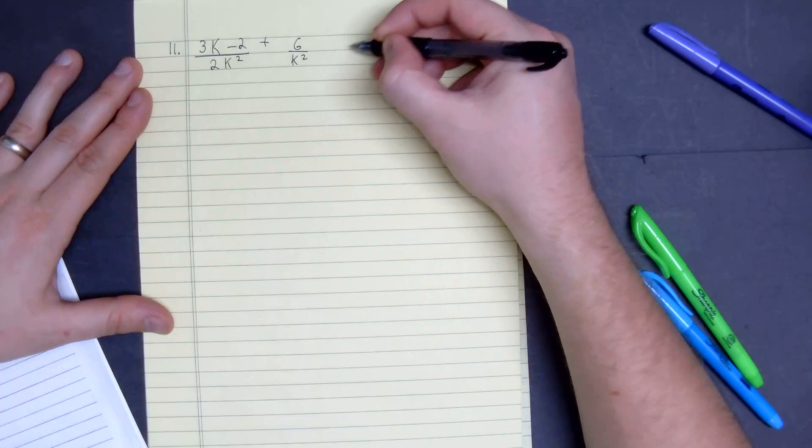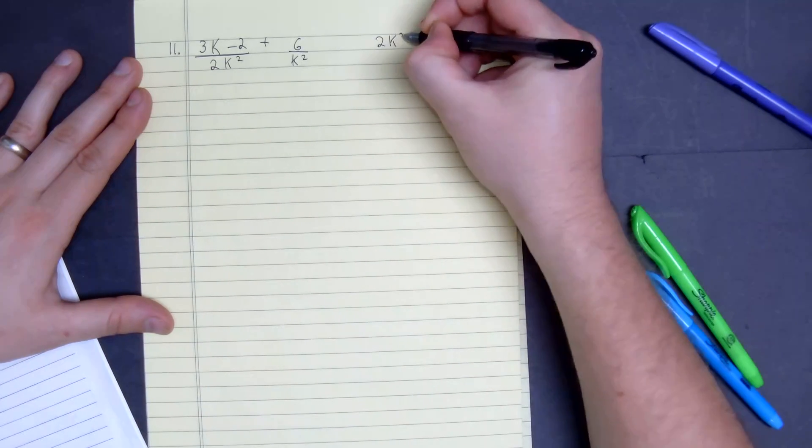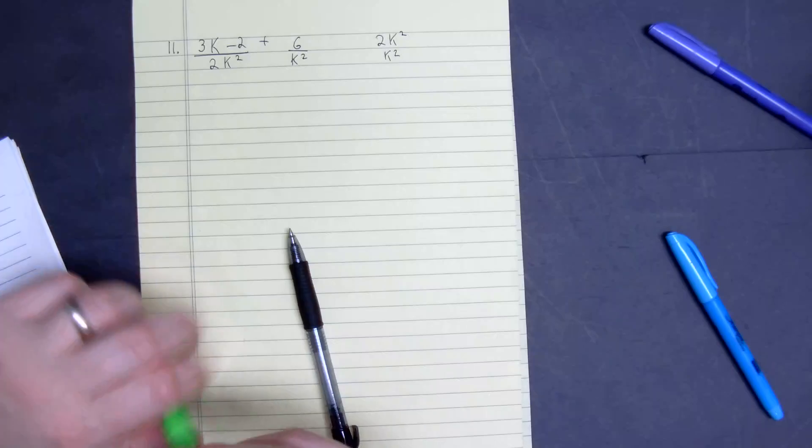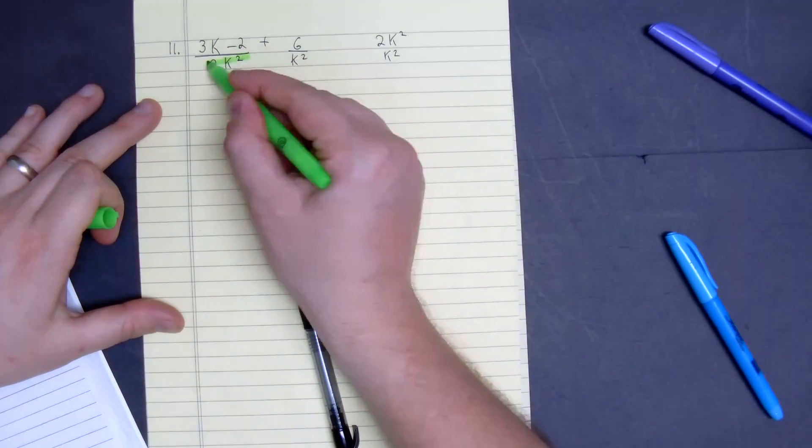So to do that, we have 2k squared and k squared. I'm going to see what the LCD between both of them are.